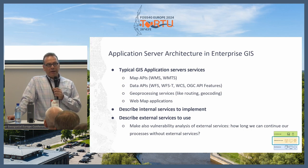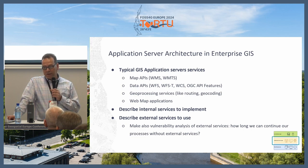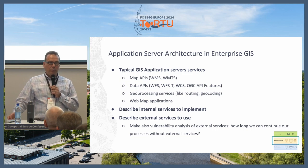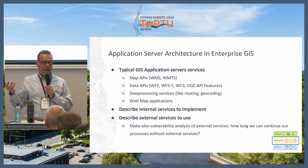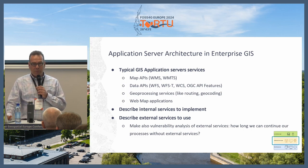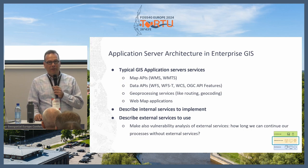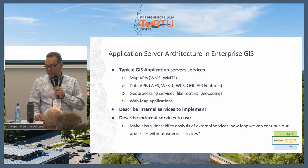Application servers in enterprise GIS include map APIs, data APIs, geoprocessing services, and web map applications. Describe both internal services and external services you provide or use. Importantly, if your processes depend on external APIs, perform a vulnerability analysis — what happens if those APIs are not available? If your business process stops because you can't get geocoding services, it will cost your organization a lot of money.